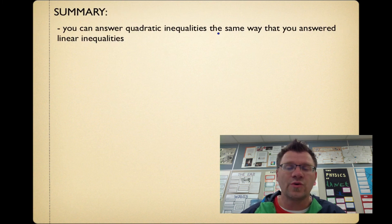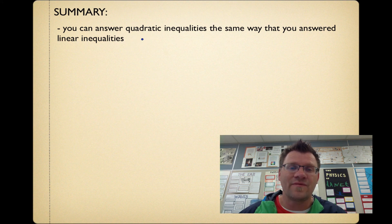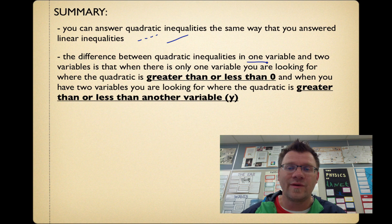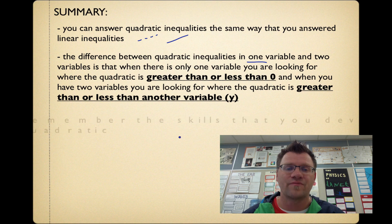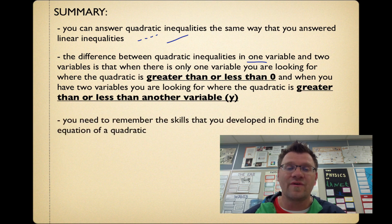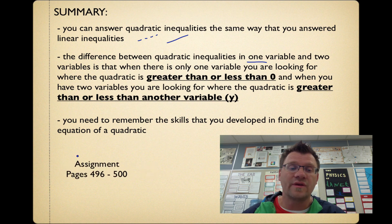In summary, quadratic inequalities in two variables are solved the same way as linear inequalities: graph the parabola, choose a test point, and shade accordingly. Use a dotted line when there's no equal sign, and a solid line when there is. The key difference from one-variable quadratic inequalities is that here you're looking for where the quadratic is greater or less than another variable y, rather than just above or below the x-axis. Also remember the skills for finding the equation of a quadratic. Assignment is on pages 496 to 500.